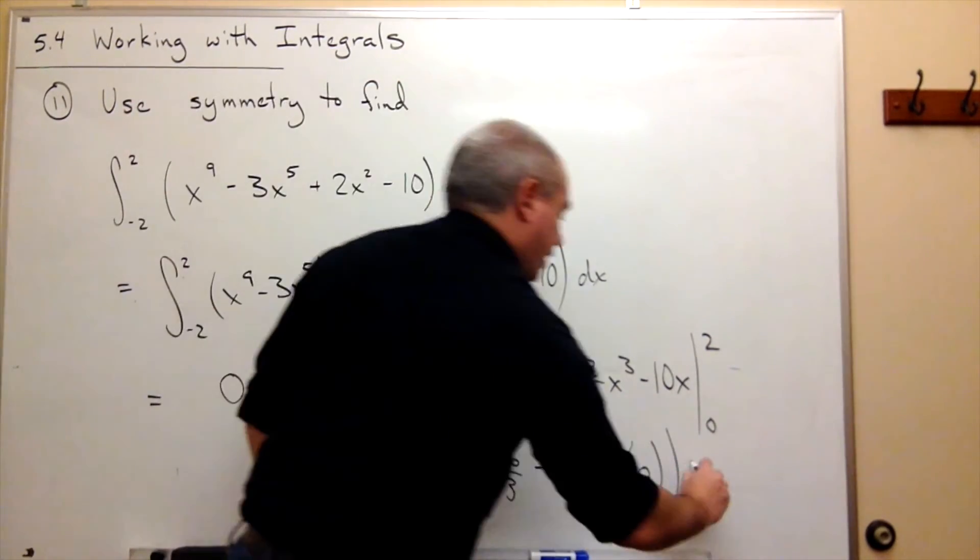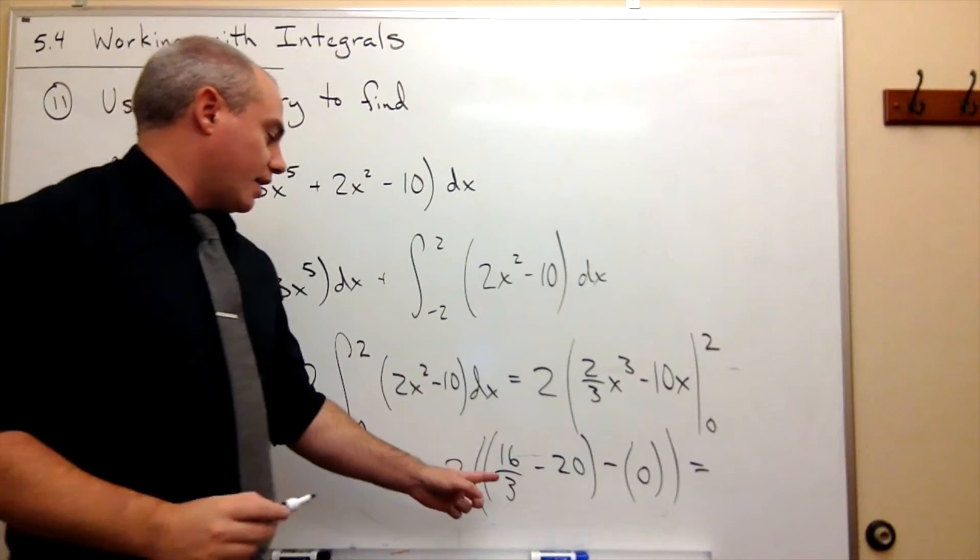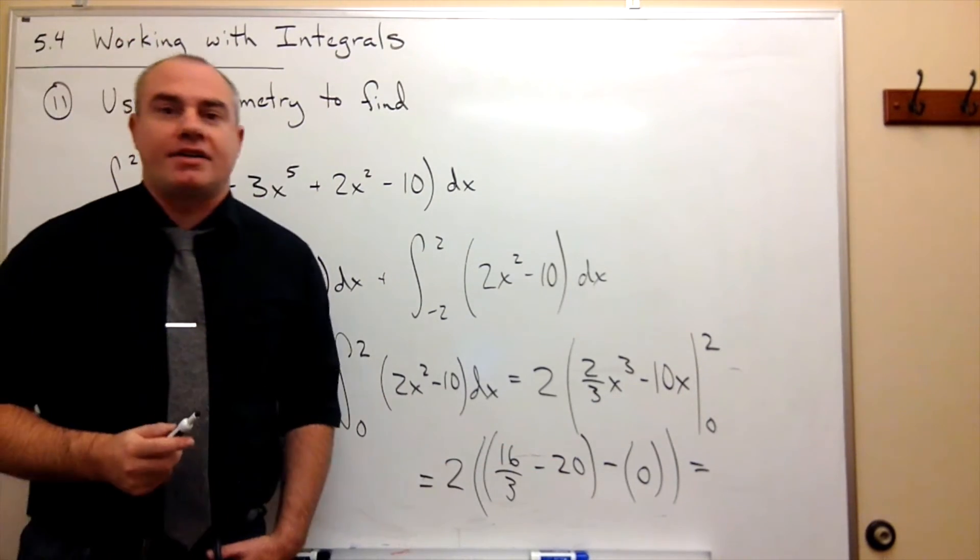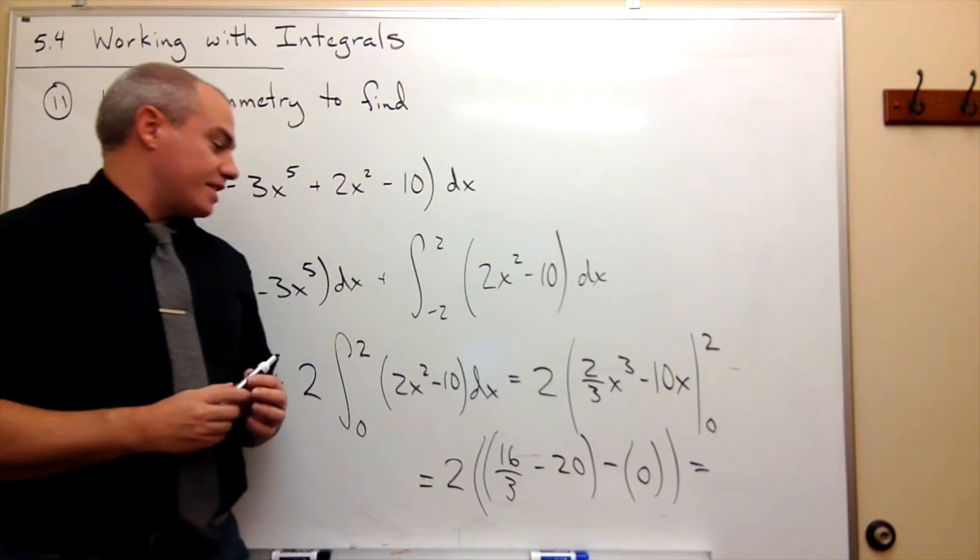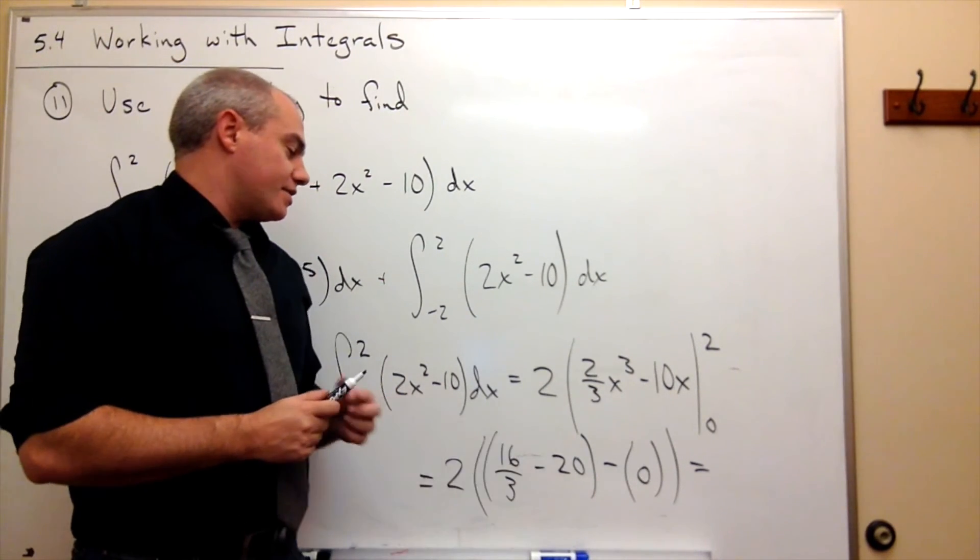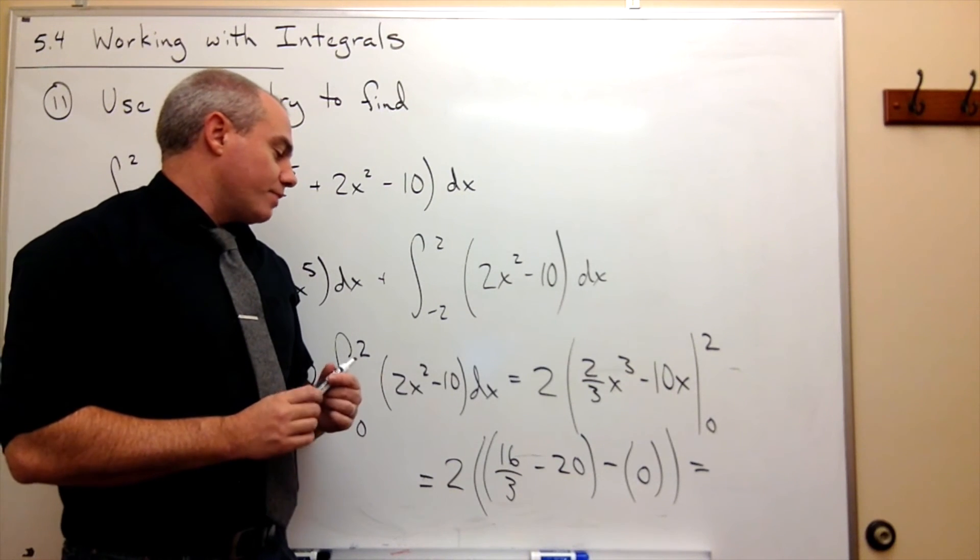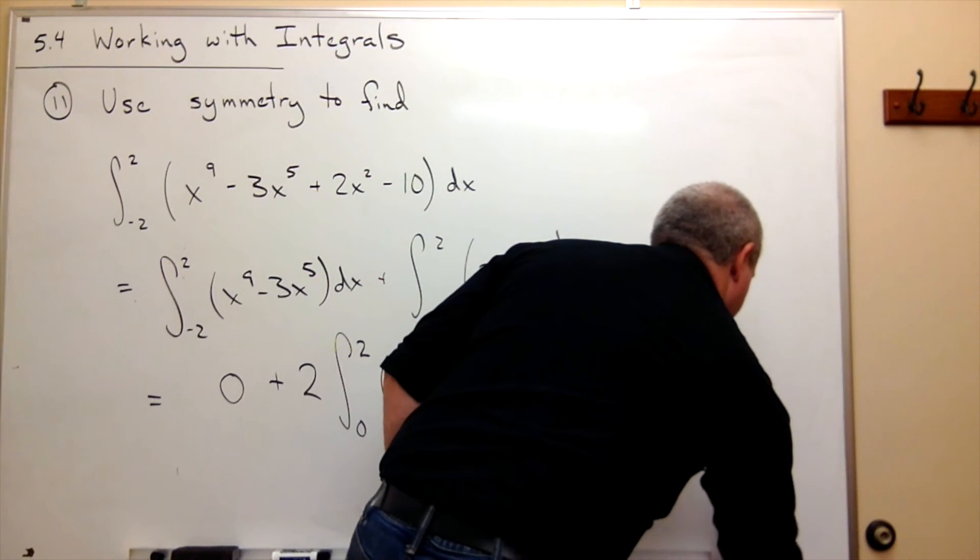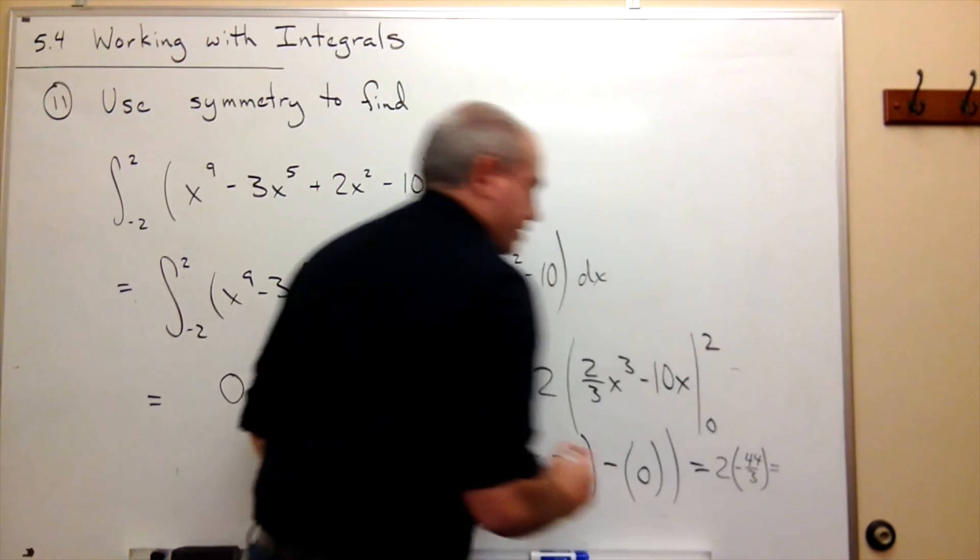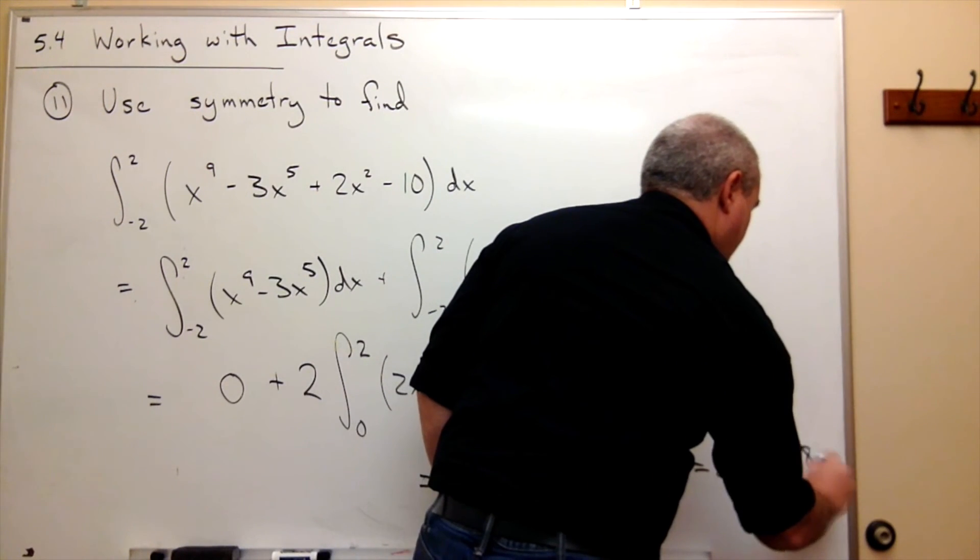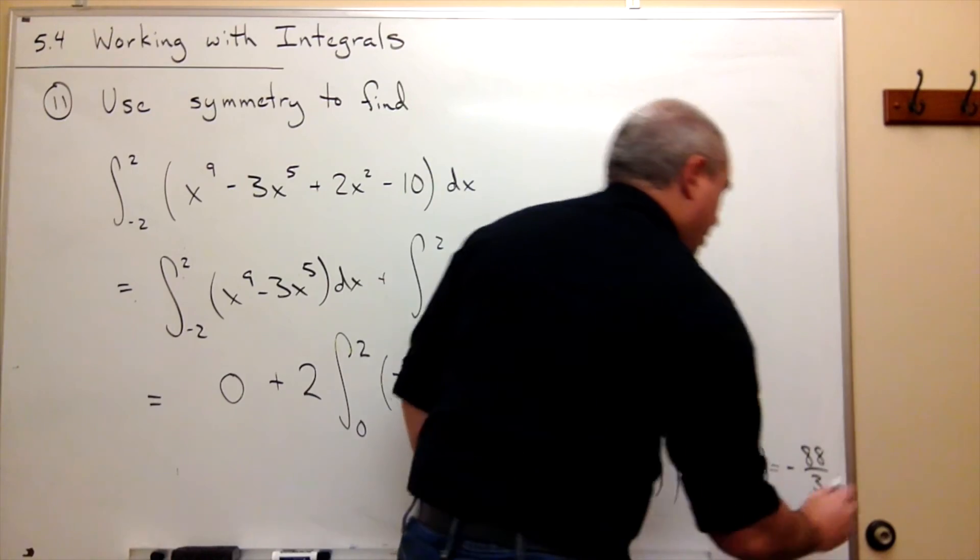And so I just get 2 times 16/3 minus 20. Well, what is that? 20 is the same as 60/3. So if I take 16/3 minus 60/3, I suppose that would be negative 44/3. So it's 2 times negative 44/3, which is the same thing as negative 88/3.